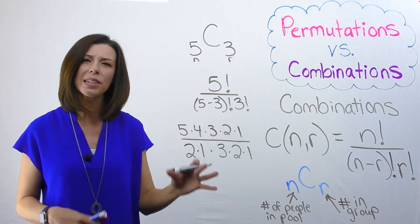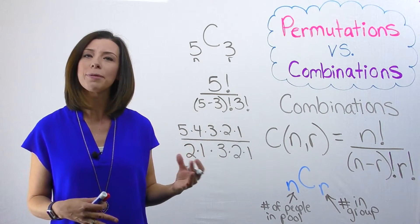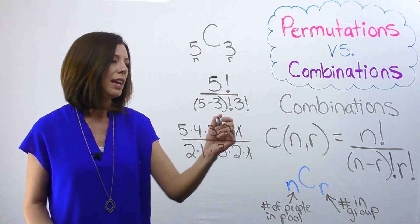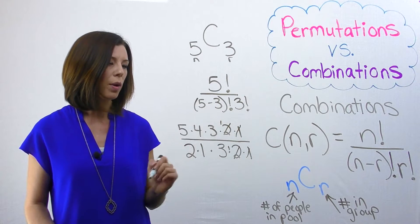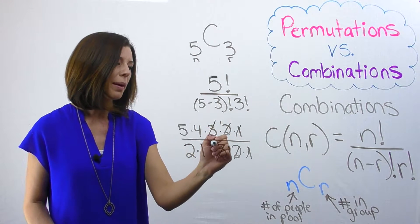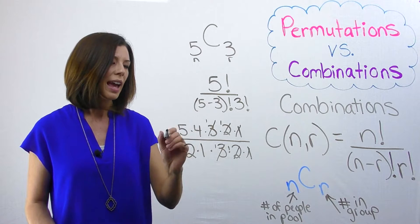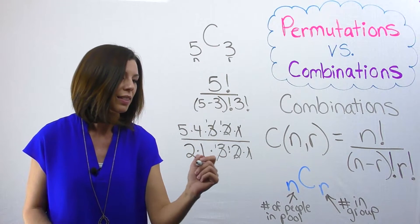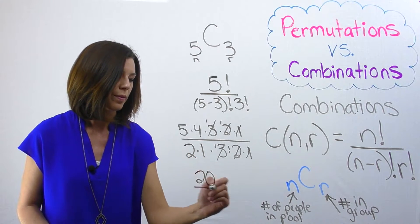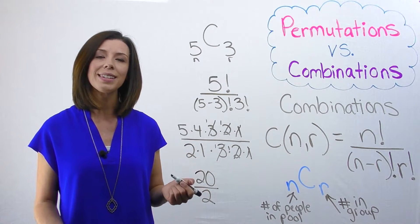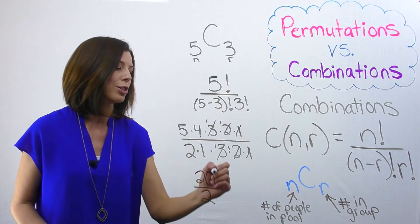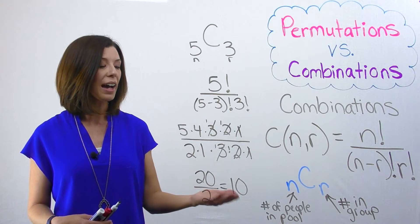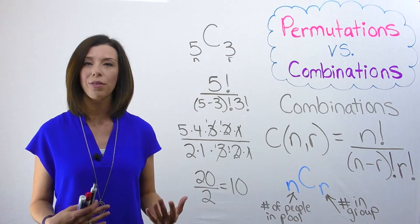I went ahead and just expanded this so we can really see how we're simplifying and making those ones. This two can be divided by this two to make my ones. This three can be divided by this three to make my ones. And I can see that I have five times four over two times one. This would give me 20 over two. I can simplify this to get 10 possible combinations. So there are 10 possible ways that I can group my five students into groups of three.